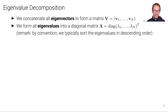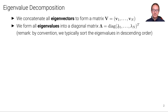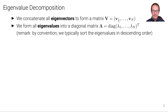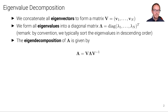To remove further ambiguity, by convention we typically sort the eigenvalues in descending order. If lambda 1 is not the largest eigenvalue, we swap it with another lambda until we achieve descending order, and of course we swap the corresponding columns of V in the same way. The eigendecomposition of A is then given by A equals V times Lambda times V inverse.